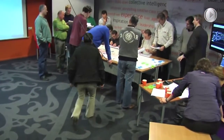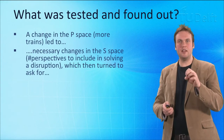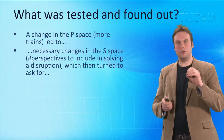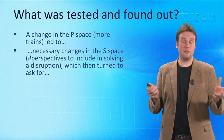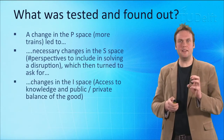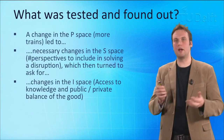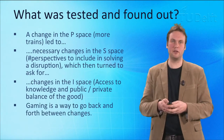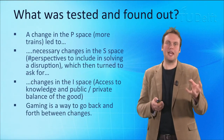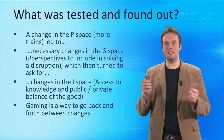So what was tested and found out? A change in the P space — more trains obviously — leads to changes in the S space: it leads to new arrangements between the people that need to be involved in solving the disruption. To do so, we need to change the rules of the organization, access to knowledge, and for instance the public-private balance of this particular good. And here we really proved that gaming is a way to go back and forth between changes in these different spaces.